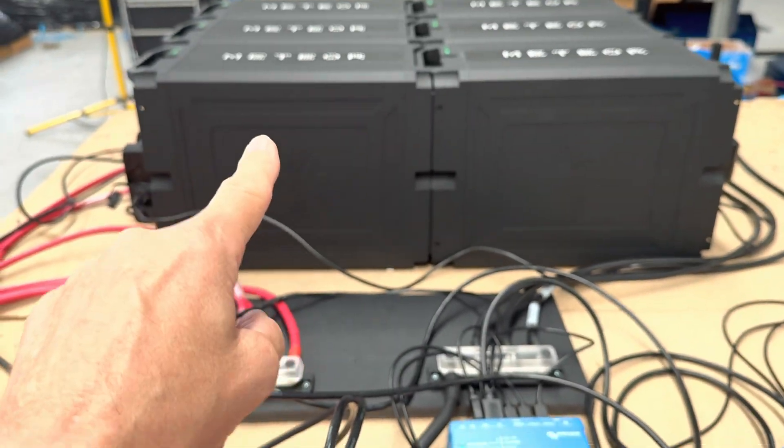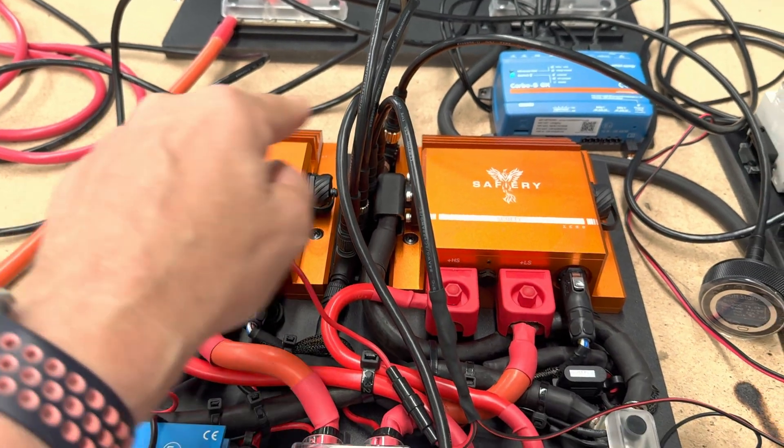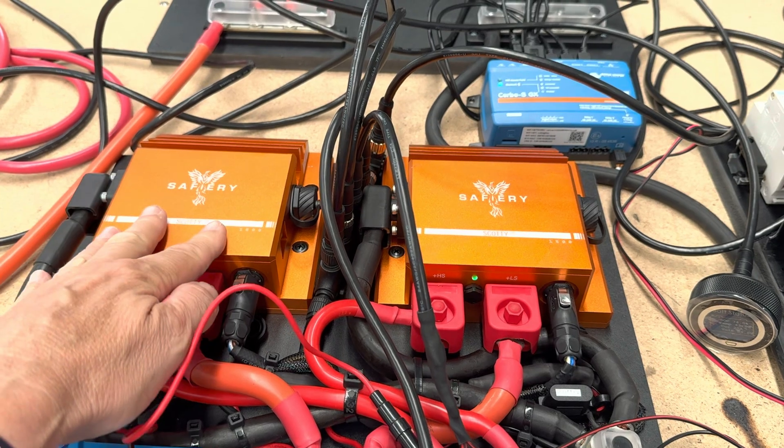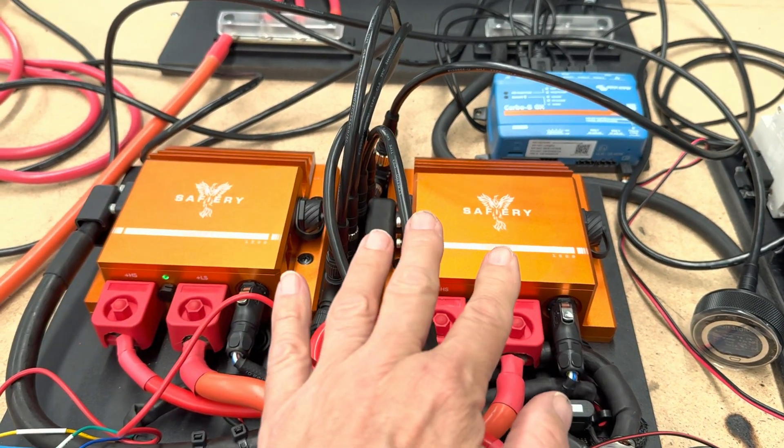So a recap, 48 volt here coming down. These Scotties here are 12 to 48. Why do we have two? Because it's going in a catamaran, each engine on each side, two different starter batteries that are running on it.